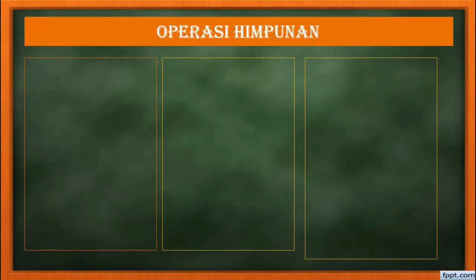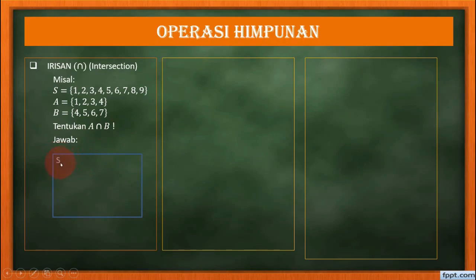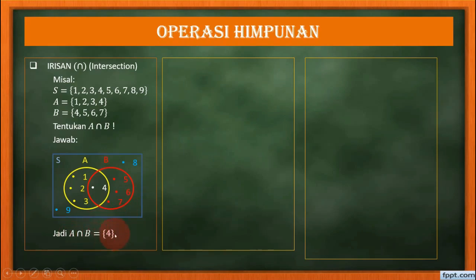Selanjutnya adalah operasi himpunan. Yang pertama, irisan. Misal, himpunan semesta beranggotakan 1, 2, 3, 4, 5, 6, 7, 8. Himpunan A: 1, 2, 3, 4. Himpunan B: 4, 5, 6, 7. Tentukan A irisan B. Kita tulis dalam diagram Venn: masukkan anggota A yang tidak termasuk ke dalam anggota B, yaitu 1, 2, dan 3. Anggota B yang tidak termasuk ke dalam anggota A yaitu 5, 6, dan 7. Anggota yang sama-sama ada di A dan B yaitu 4, tulis di tengah atau berpotongan. Yang tidak termasuk ke dalam anggota A maupun B kita tulis di luar, yaitu 8 dan 9. Jadi A irisan B sama dengan 4.